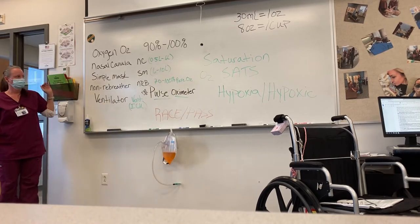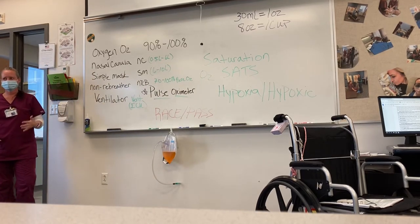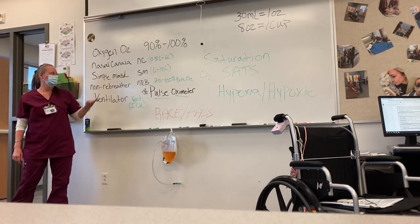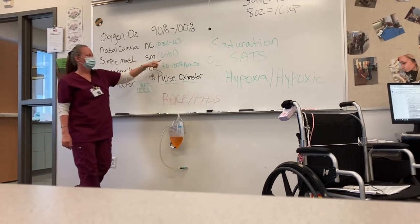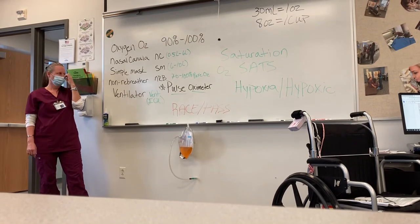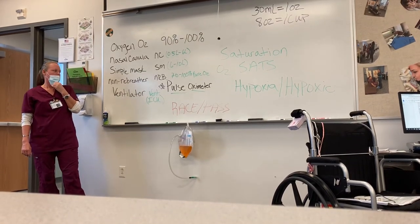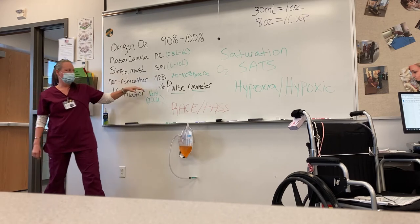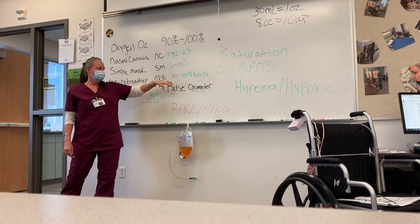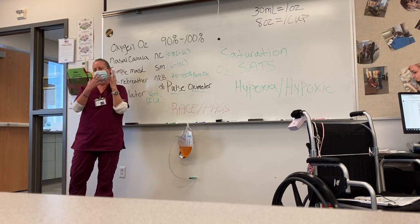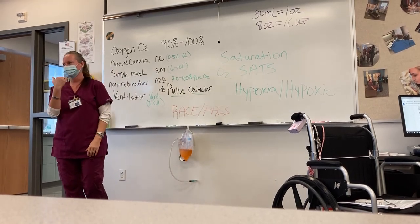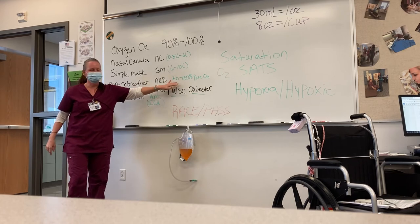If that doesn't work — if we've done everything we can to get their oxygen levels up to 90 — we will go to a simple mask, abbreviated SM. A simple mask will blow six to ten liters of oxygen. If that doesn't work, we will go to a non-rebreather mask, NRB. This mask is designed so that the air does not circulate — when they exhale it goes out these valves, and they are breathing straight oxygen: 70 to 100% pure oxygen.